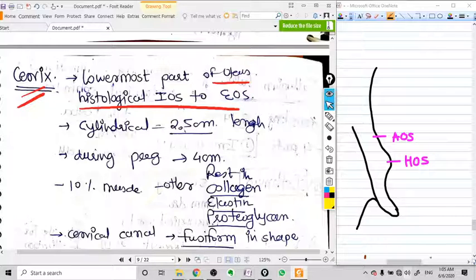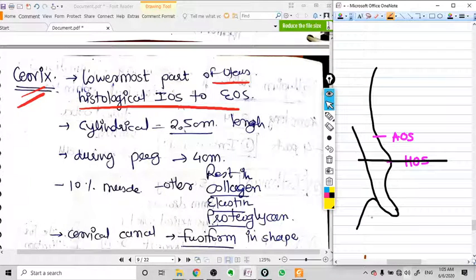These are nothing but confusion things, we should not have so much attention on these. Internal os means when the cervical canal ends, and external os means when the cervical canal starts. So this is the external os and this is the internal os.